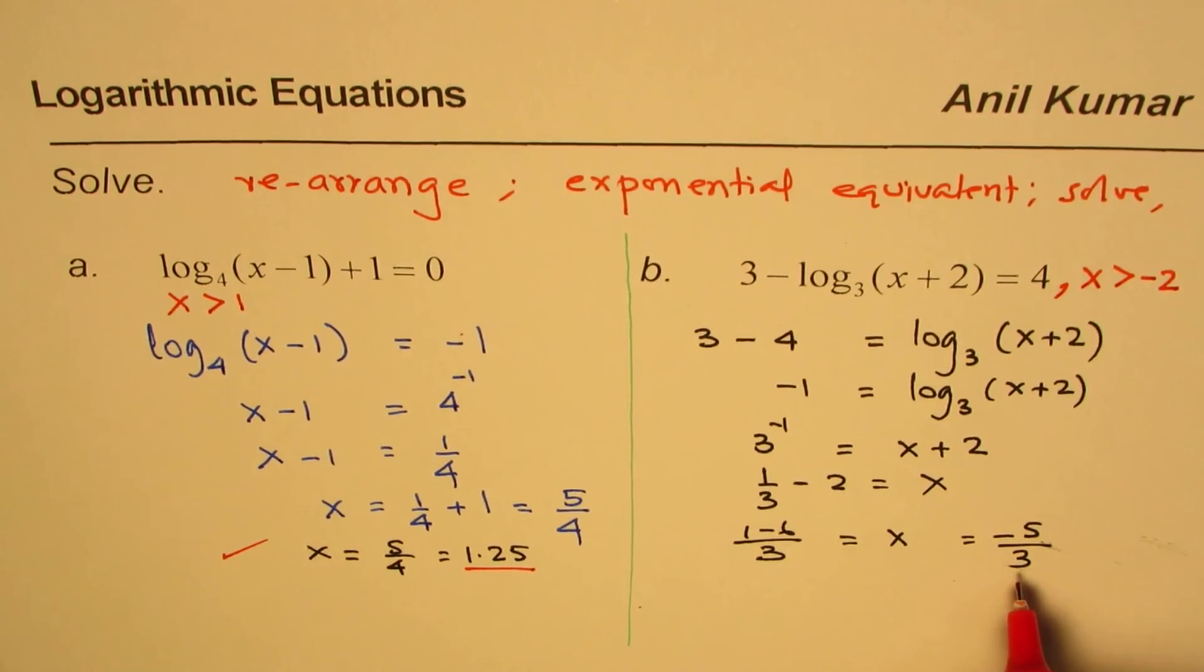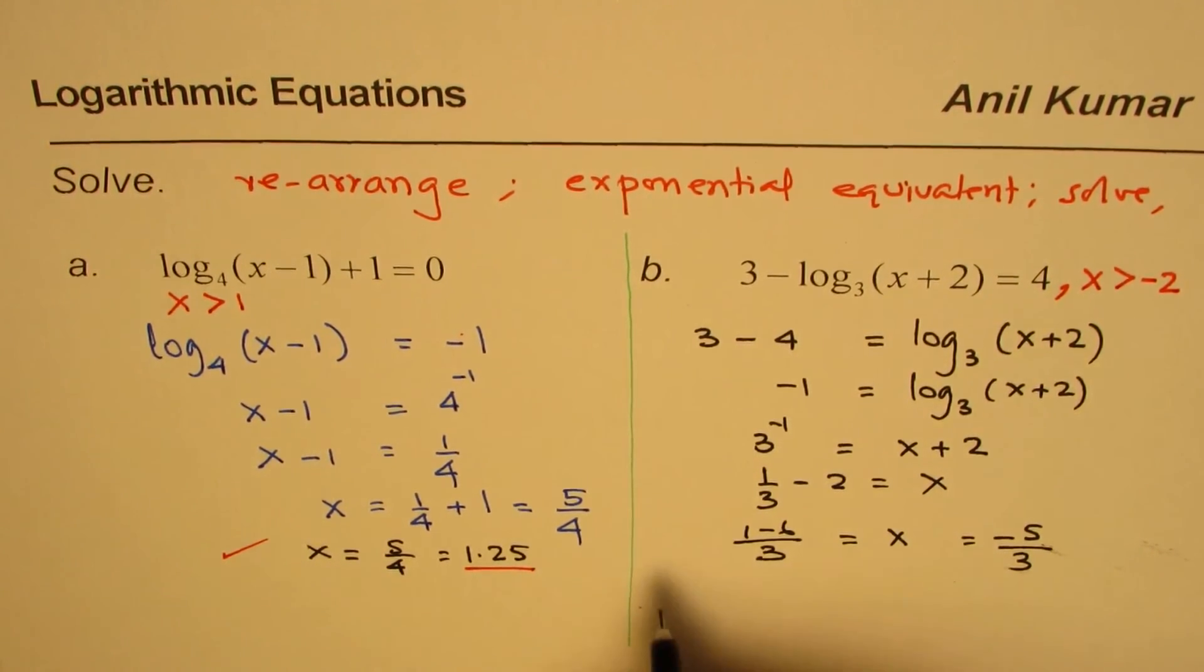Minus 6 over 3 is minus 2. So that should work. So you substitute this value, check your result, and find the solution, whether it is correct or not. So we do get the solution here. The answer is minus 5 over 3.